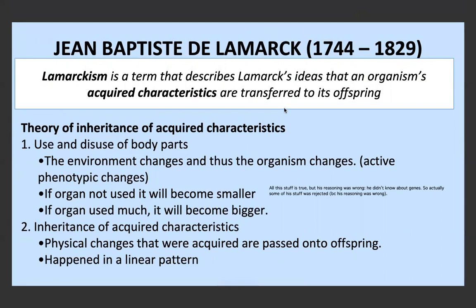Lamarckism describes his idea that an organism's acquired characteristics are transferred to its offspring, which relates to inheritance. We know this isn't completely correct because organisms don't acquire new characteristics over their lifetime in that way. But what was correct about his idea was that changes are inherited by offspring. As the environment changes, the organism is forced to change — active phenotypic changes. Lamarck's ideas are in general pointing in the right direction, but his reasoning wasn't fully correct because he didn't know much about genes.